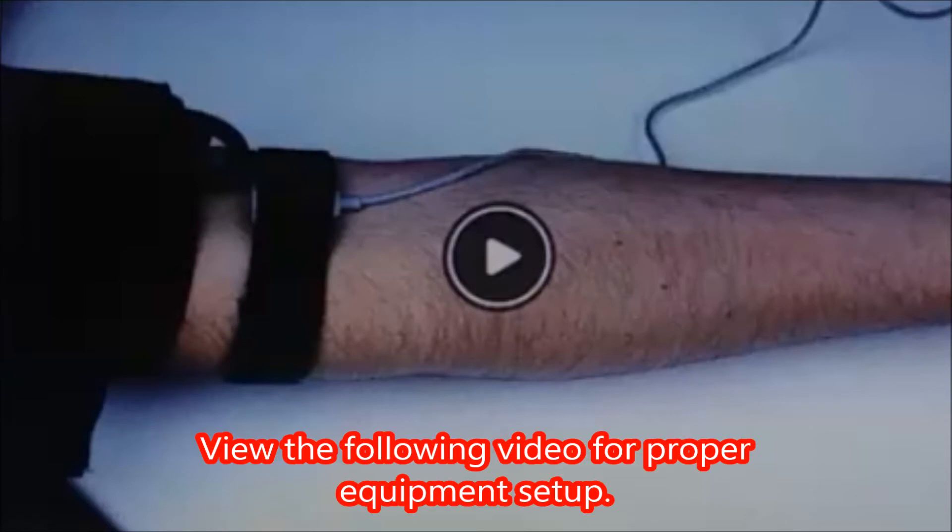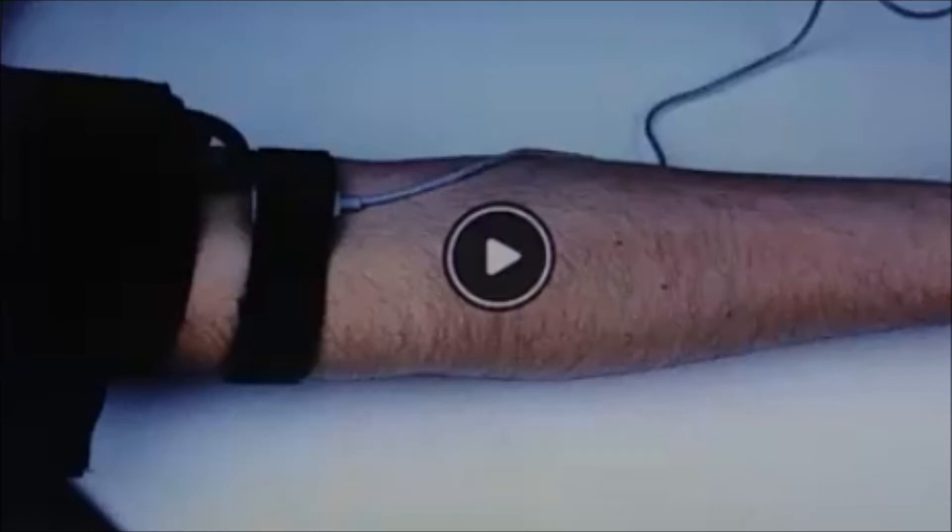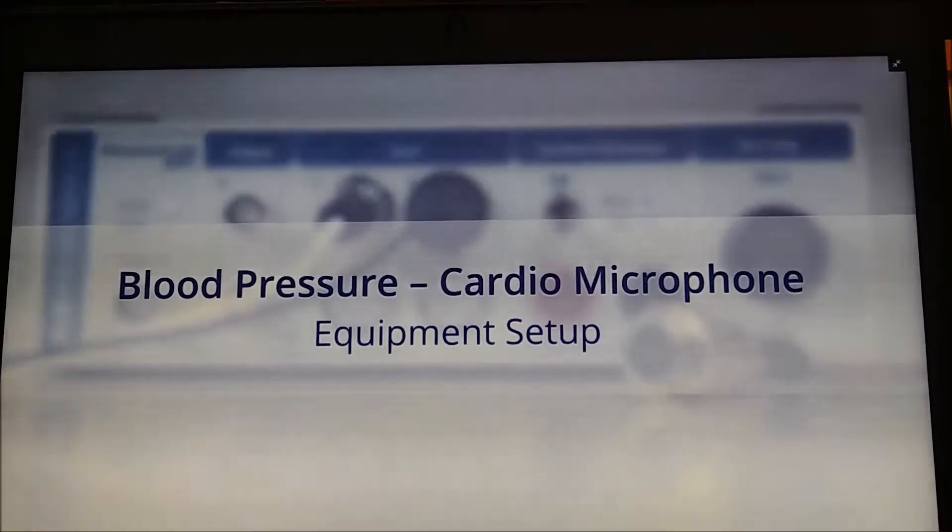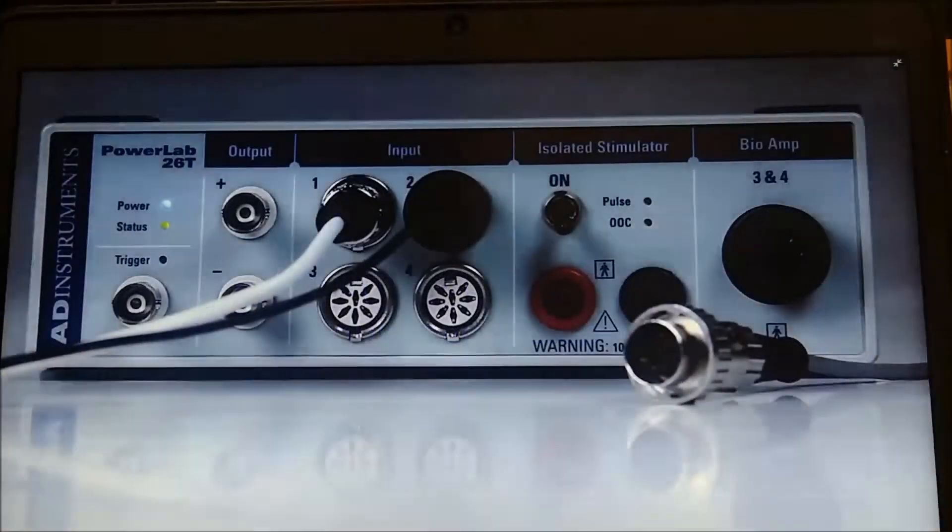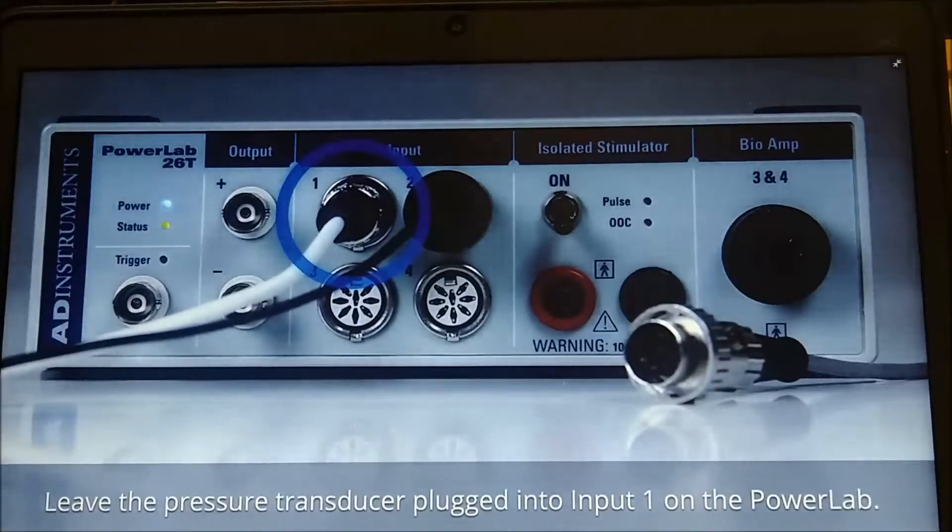View the following video for proper equipment setup. Blood pressure cardio microphone equipment setup. Leave the pressure transducer plugged into input 1 on the PowerLab.